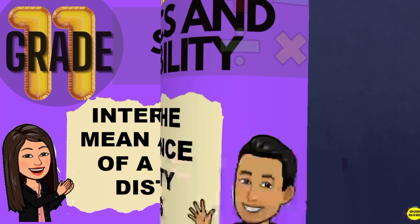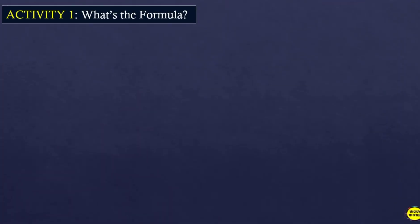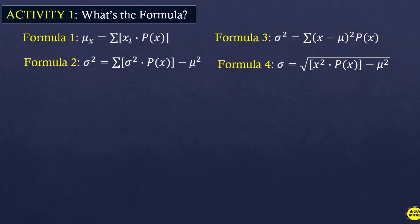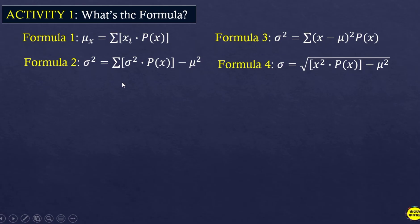We will also recall and apply the formulas for the mean, variance, and standard deviation of a discrete random variable. For the first activity, I have here four formulas and I will give a situation — you will select the appropriate formula for that situation. Formula one is for the mean. Formulas two and three are for the variance, and formula four is for the standard deviation.